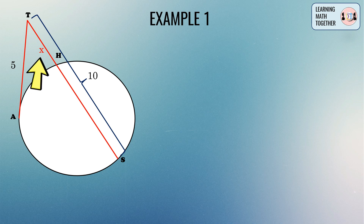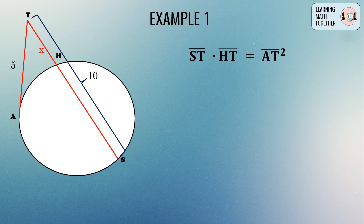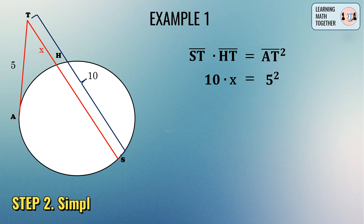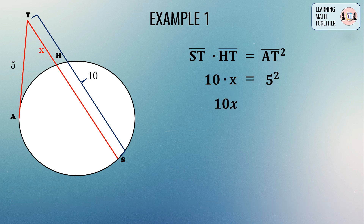To determine the length of line segment HT, we use the formula and substitute the given values. Line segment ST equals 10, line segment HT equals x, and line segment AT equals 5. Substituting: 10 times x equals 5 squared. Simplifying the left side: 10 times x equals 10x.